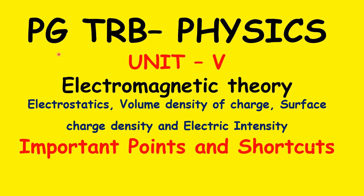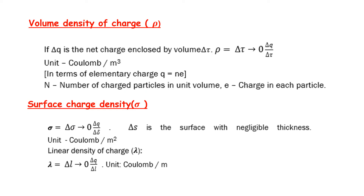Hi, welcome to our channel. Enigma PGTRP Physics Lab, Unit 5: Electromagnetic Theory — Electrostatics. Volume Density of Charge, Surface Charge Density, and Electric Intensity. Important points and shortcuts are discussed here from an exam point of view — one mark and MCQ. If you prepare a follow-up notebook, you will definitely score marks.